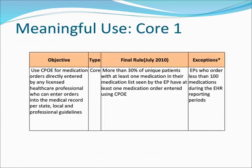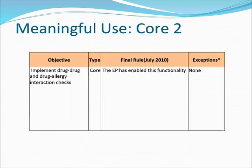Meaningful Use Core 1, Final Rule: More than 30% of unique patients with at least one medication in their medication list seen by the EP must have at least one medication order entered using CPOE. Exception: EPs who order less than 100 medications during the EHR reporting period.